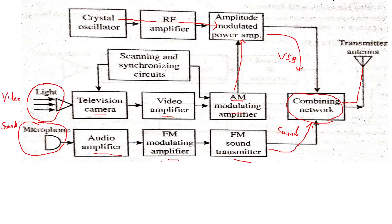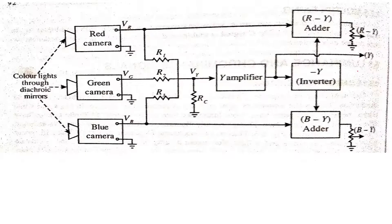We use three signals — red, green, and blue — as primary colors, and then develop other colors from them. Looking at the diagram showing how signals are generated for a color TV transmitter in the PAL system: we follow the PAL system because that is what is used in our country. The diagram shows a red camera, a green camera, and a blue camera.